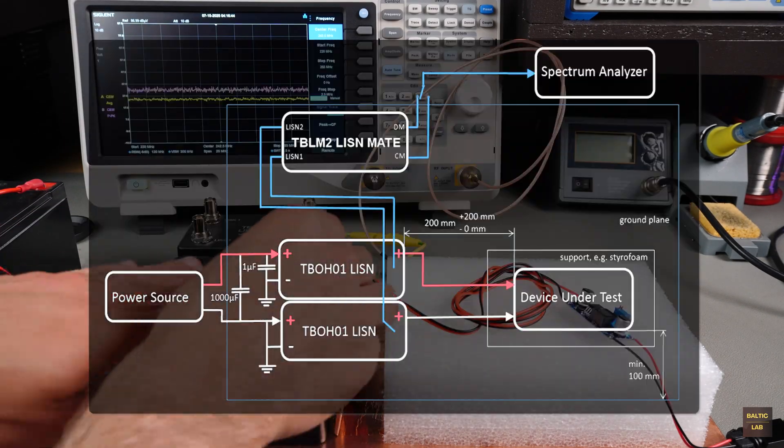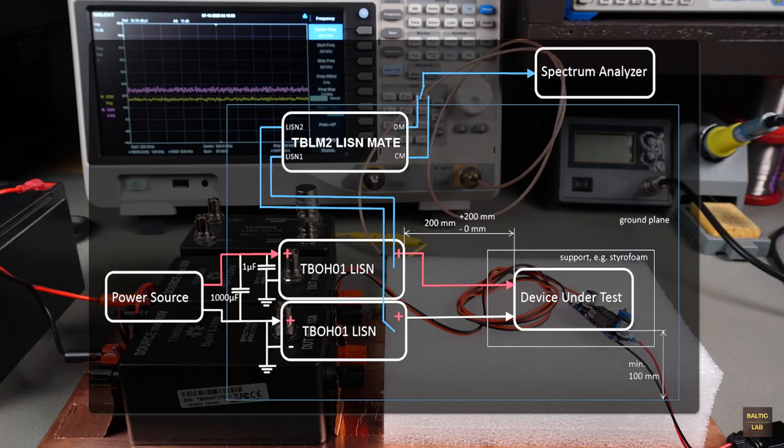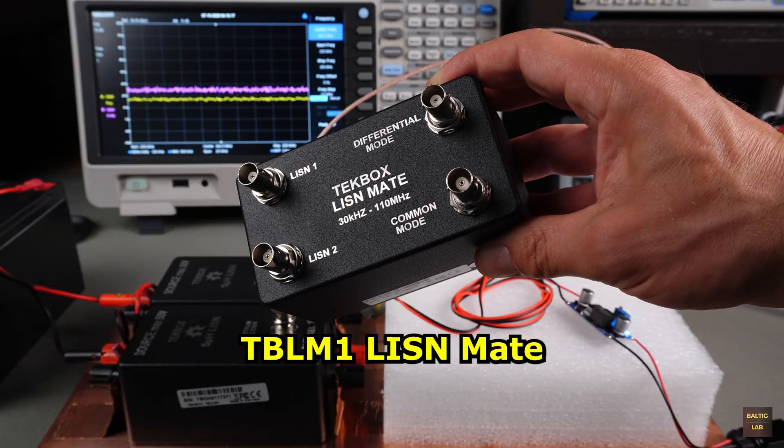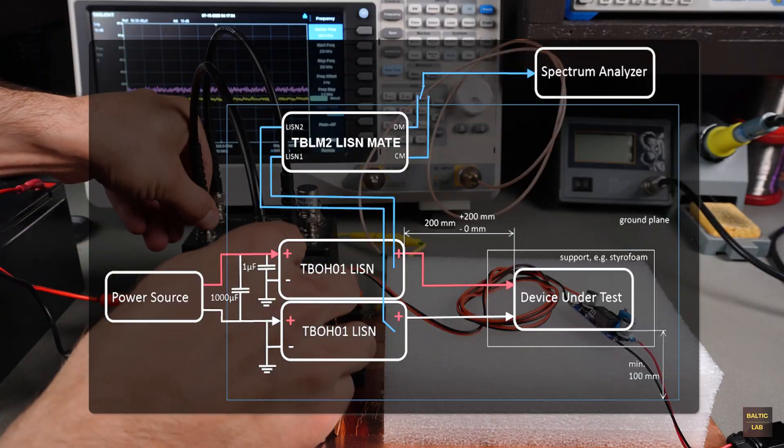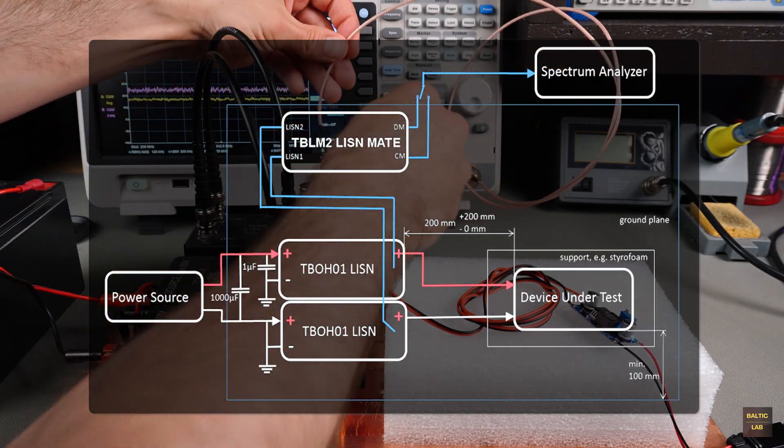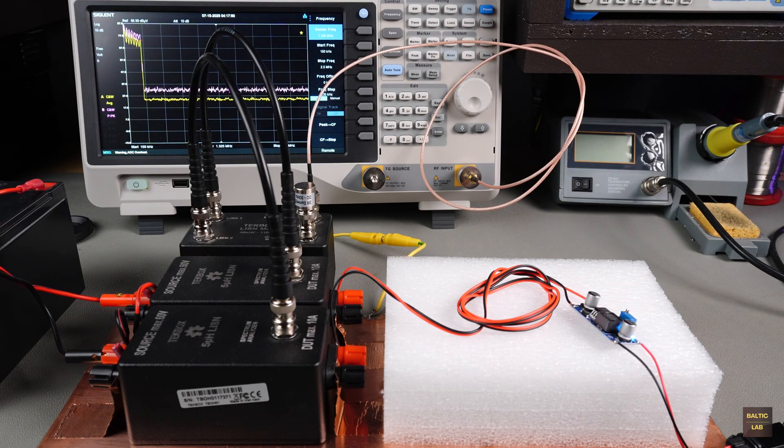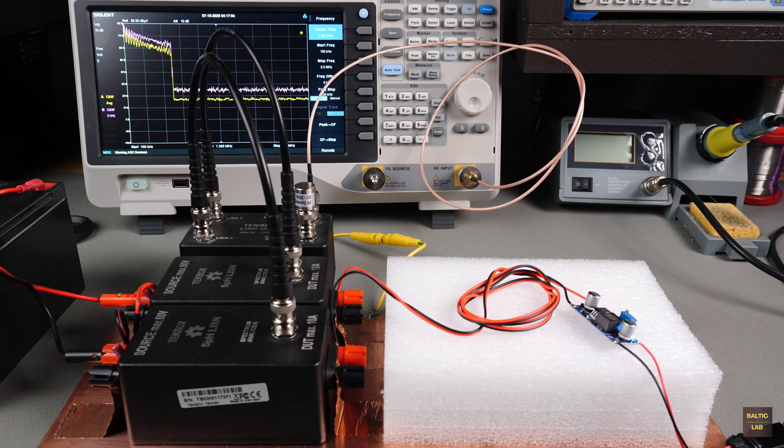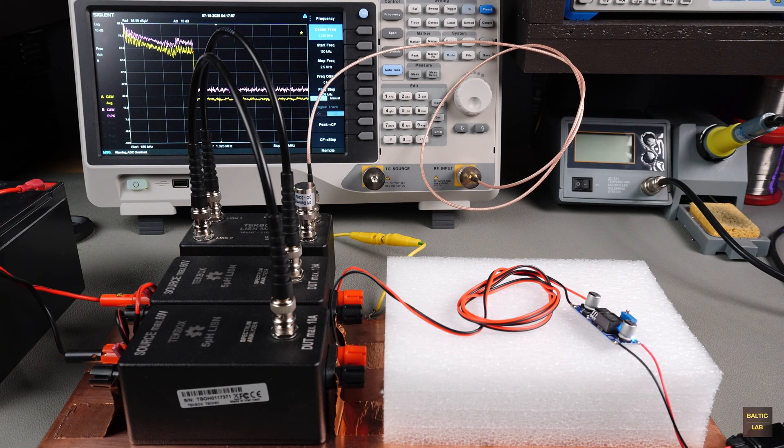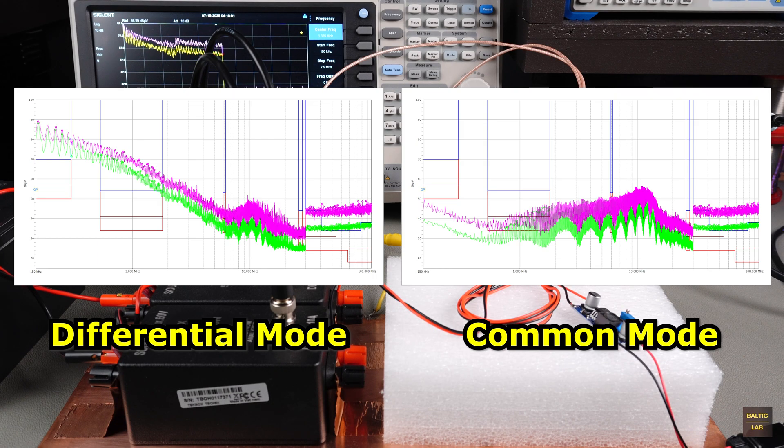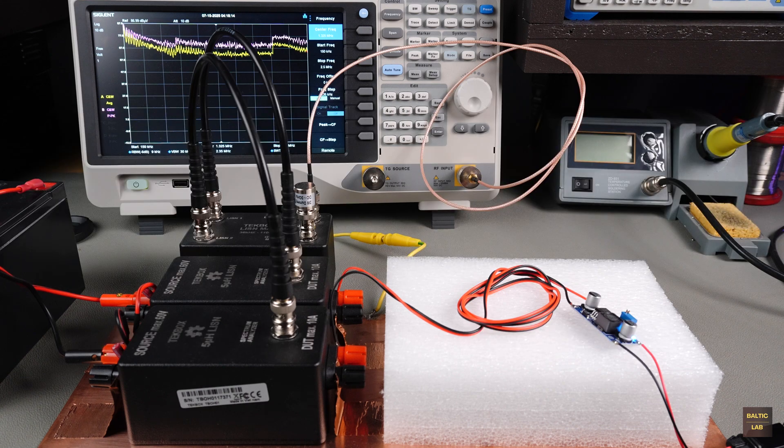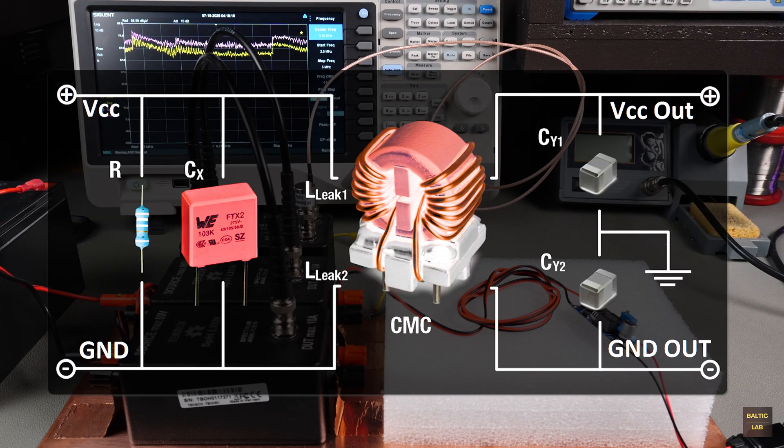Each type of interference behaves differently in EMC terms and requires its own filtering strategy. Since two LISENs are used in the setup, it's relatively easy to modify the test to separately measure differential and common mode noise. For this, a TBLM-1 ListenMate from TechBox is connected to the two LISENs. Depending on the desired mode, either the differential or common mode output of the listen mate is connected to the spectrum analyzer. The unused output is terminated with a 50 ohm resistor. When analyzing differential and common mode emissions separately, a familiar pattern appears. Differential mode noise decreases with increasing frequency, while common mode noise increases. This is partly because the coupling and radiation mechanisms typical for common mode noise become stronger at higher frequencies.